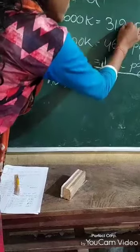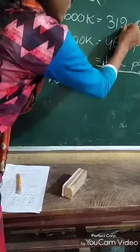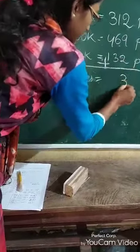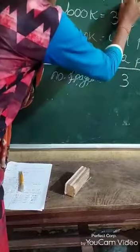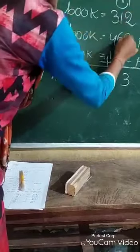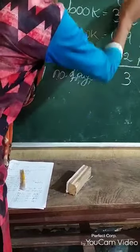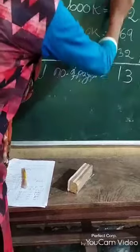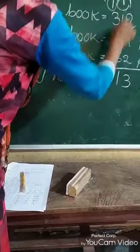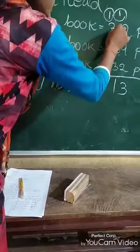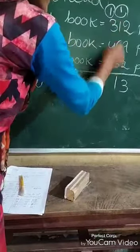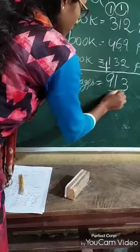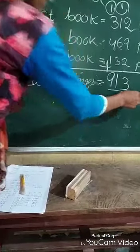9 plus 2 is 11, plus 2 is 13 — write 3, carry 1. 6 plus 3 is 9, plus 1 is 10, plus 1 is 11 — write 1, carry 1. 1 plus 4 is 5, plus 3 is 8, plus 1 is 9. Total is 913 pages.